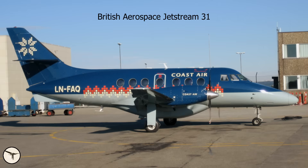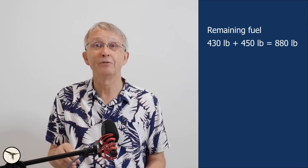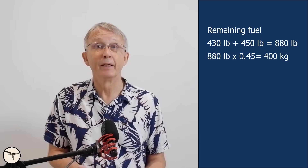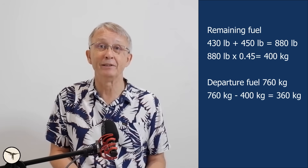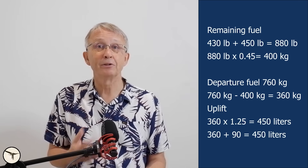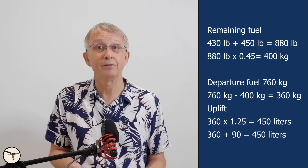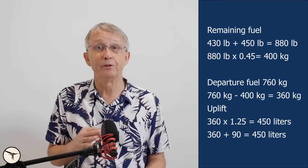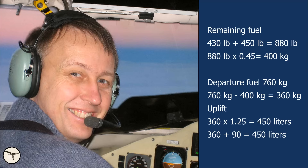Before flying the ATR, I flew the Jetstream 31 — the challenge was different units everywhere. Fuel indicators showed pounds, the load sheet used kilograms, and the fuel truck delivered liters. In a typical scenario: 430 pounds in the left tank and 450 in the right, totaling 880 pounds — approximately 400 kg. For the next flight I needed 760 kg, so 360 kg was needed to top up. Converting: 360 kg × 1.25 = 450 liters, split as 230 liters in the left tank and 220 liters in the right.